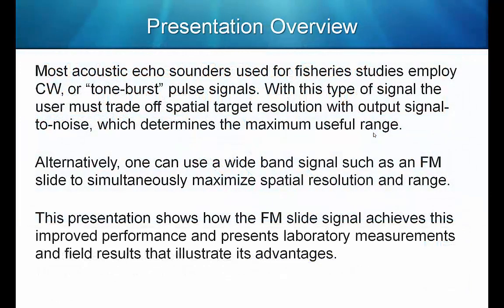Most acoustic echo sounders used for fisheries studies employ CW, or tone burst, pulse signals. With this type of signal, the user must trade off spatial target resolution with output signal-to-noise, which determines the maximum useful range. CW is short for continuous wave, a constant amplitude and frequency signal, called tone burst because the signal produced has a constant frequency, which creates a single pitch or tone.